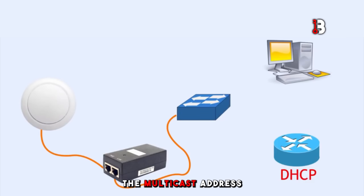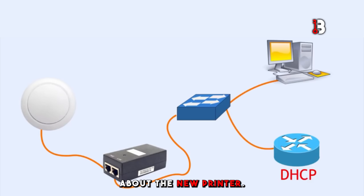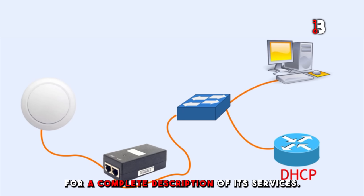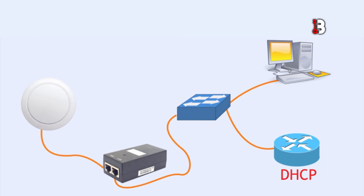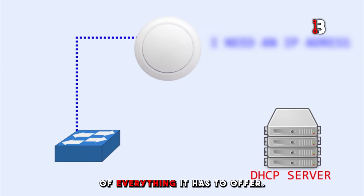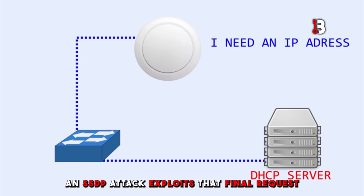The multicast address then tells all the computers on the network about the new printer. Once the computer hears the discovery message about the printer, it makes a request to the printer for a complete description of its services. The printer then responds directly to that computer with a complete list of everything it has to offer.